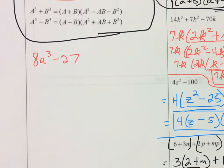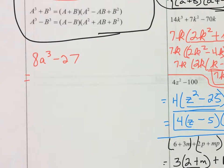Eight is the cube of 2, and 27 is the cube of 3. I encourage you to memorize the cube numbers through the cube of 6, and also that the cube of 10 is 1,000. Once you recognize this as a difference of two cubes, we write each term as something cubed: 2a cubed minus 3 cubed. This lets us identify a = 2a and b = 3 for the formula.